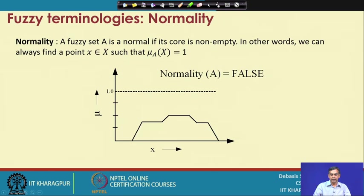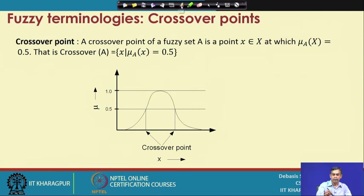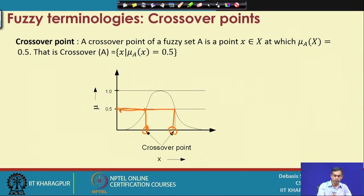Regarding normality: a fuzzy set can be termed as normal — and it is basically a crisp/Boolean value, either 0 or 1 — if it contains at least one element whose core is nonempty, meaning at least one element whose membership value is 1. If it does not contain any element whose membership value equals 1, then it is not normal. The crossover point: elements whose membership value is exactly 0.5 are called the crossover point. For example, in this graph, these two elements have membership value 0.5 — these elements which belong to set X are the crossover points.